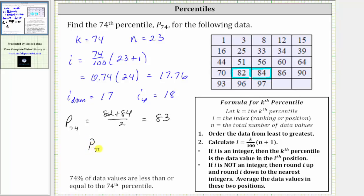The 74th percentile is equal to 83. And remember, 74% of the data values are less than or equal to the 74th percentile. Which means in our case, 74% of the data values are less than or equal to 83. I hope you found this helpful.